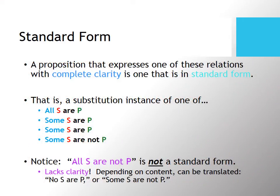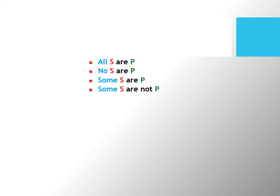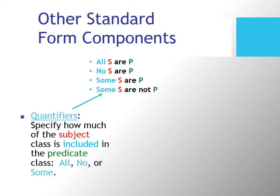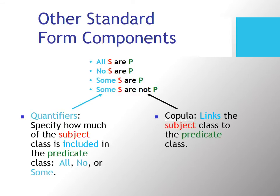These four forms are the only ones we'll use in this section on categorical logic. Let's look at the components. First, you have quantifiers — all, no, or some — which denote how much of the subject class you're talking about and how much is included in the predicate class. Then there's the copula, which is a functional term linking subject and predicate class. Remember to use only 'are' or 'are not' as copulas in this course — not 'is' or 'has.'